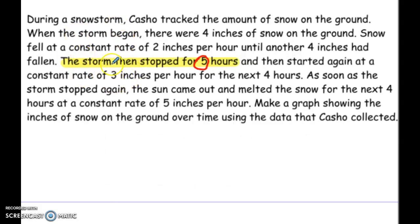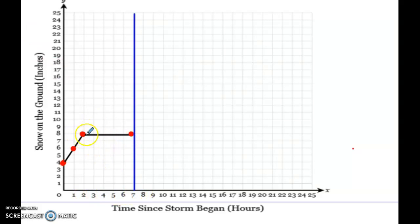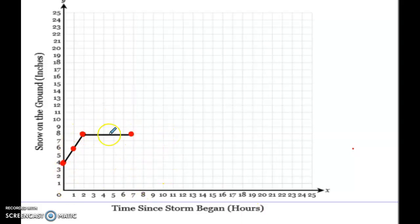The next part: the storm stopped for five hours. It just stopped — it didn't go up or down, it didn't melt, nothing happened. It just stopped for a total of five hours, so the height didn't change. You go five hours from two, that's going to be seven hours total. So you just keep a flat line for five hours until you get to seven. You don't want the blue line in your answer — just draw the black line.